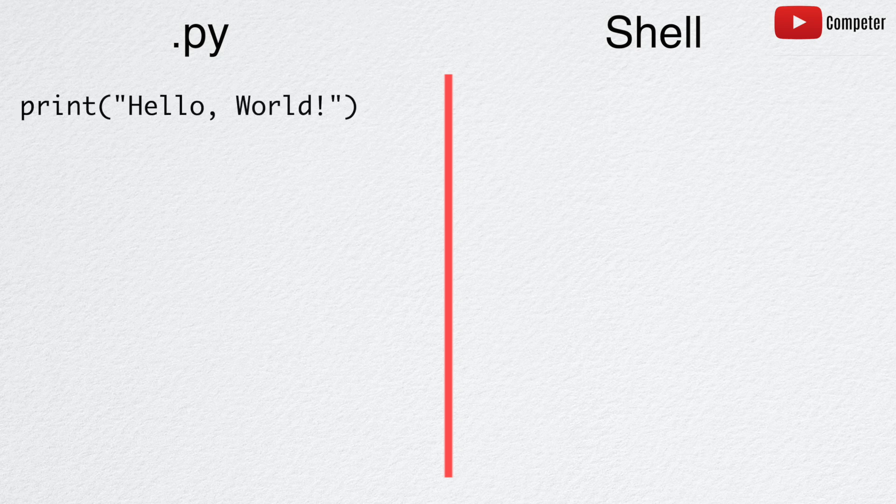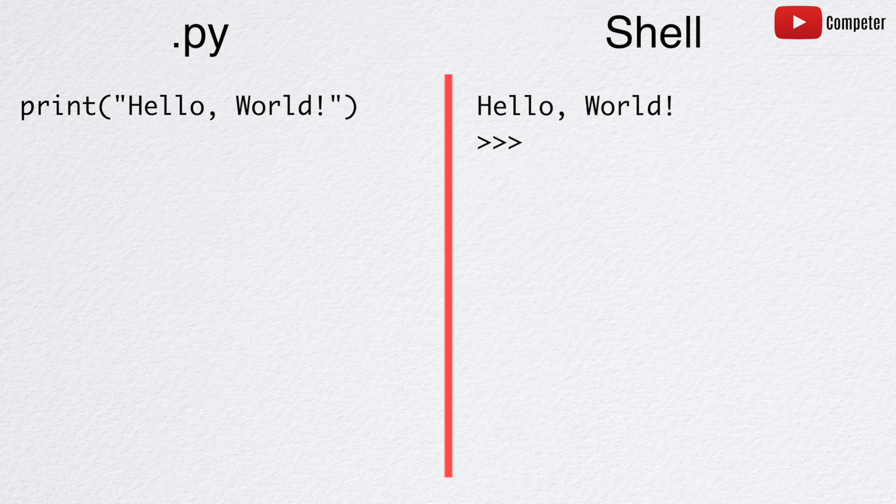A print function simply prints the argument to the console. It does nothing more or nothing less.